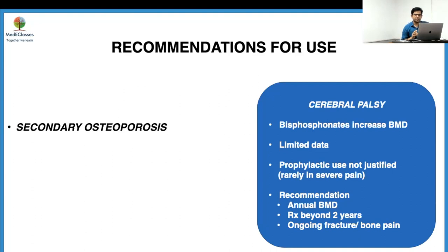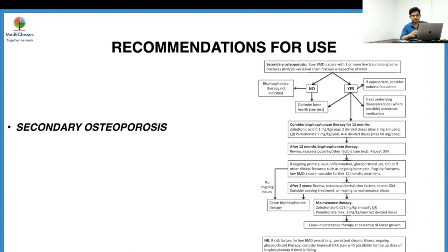For secondary osteoporosis, the flowchart is similar to primary but with differences. The indication is the same — low BMD Z-score with two or more long bone fractures or a vertebral fracture — and zoledronic acid is started at the same dose. However, after 12 months, if BMD normalizes you can stop immediately without halving the dose. If it is not improving, or if the offending drug such as glucocorticoid is continuing, consider treatment for one more year. After that year, reassess and consider stopping if improved or continue maintenance.